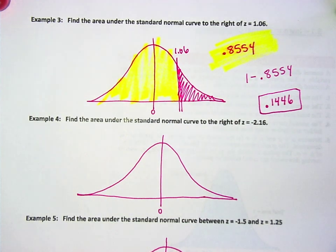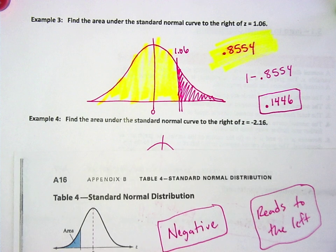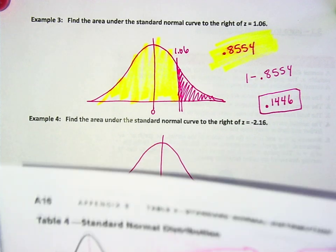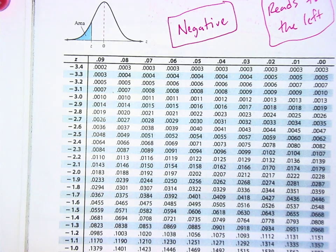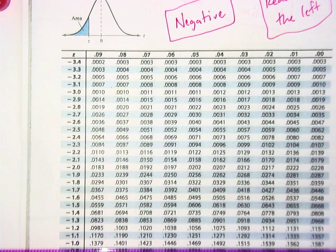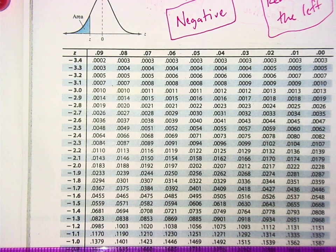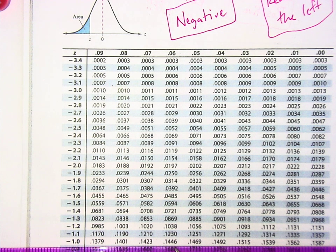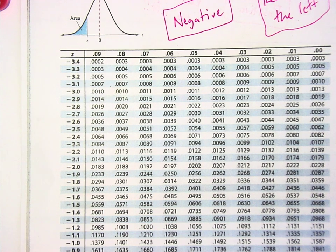Yes, nice job Natalie! Use the negative one instead. Look up negative 1.06 instead. Everybody right now turn your paper over, look up negative 1.06. Do you see how the answer is already 0.1446?